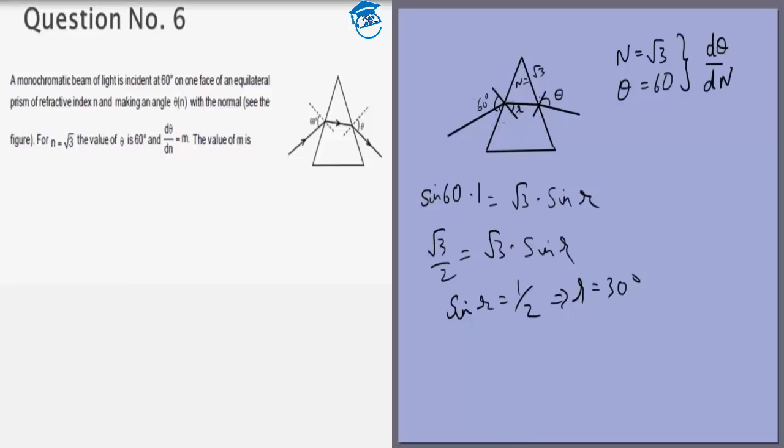Now this is given to us to be 30 degrees. If this is 30 degrees that means this is 60 degrees. If this is 60 degrees and this is 60 degrees that means the figure given to us in the question is slightly misleading. This is actually the angle of minimum deviation and this ray which is inside the prism is actually parallel.